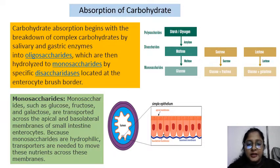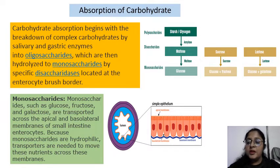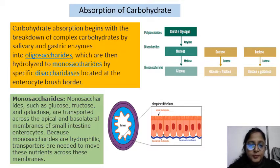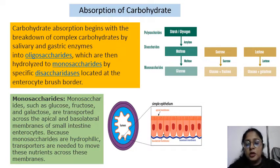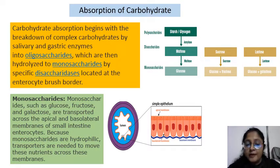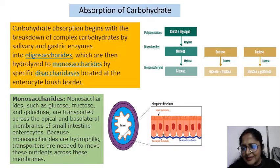Now, in what form do we get monosaccharides? We get them in the form of glucose, fructose, and galactose. Always keep in mind that out of these three, glucose and galactose are absorbed in the same manner, whereas fructose is absorbed in a slightly different manner.